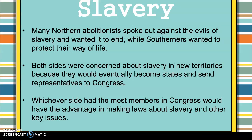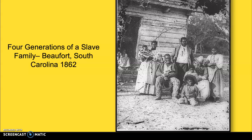A lot of Northern abolitionists were going to speak out against the evils of slavery and wanted it to end, while Southerners wanted to protect their way of life. Both sides were concerned about slavery in new territories because eventually those territories would send representatives to Congress. They didn't want Congress to be off balance — whichever side had the most members would have the advantage in making laws, especially regarding slavery. This is a photo of four generations of slaves in South Carolina from 1862.